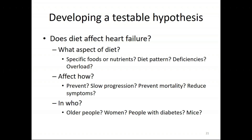To get more specific, think about what aspects of diet you're looking at — specific foods, nutrients, diet patterns, deficiencies, overload. Consider the effect: are we talking about preventing heart failure, slowing progression, reducing mortality, reducing symptoms? And in whom — older people, women, people with diabetes, mice? When I first did my literature review, most of what I could find on diet and heart failure was actually in Great Danes, who apparently have a lot of diet-induced heart failure.